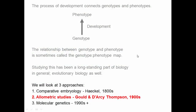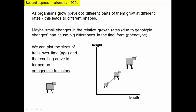In this third evo-devo video, we'll be looking at allometric studies done in the 1900s. This second approach to understanding the relationship between development and evolution studies something called allometry, and this really took off in the 1900s.